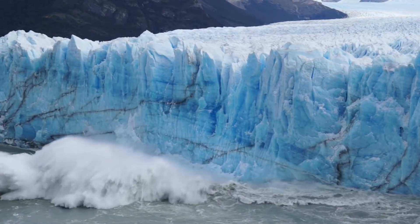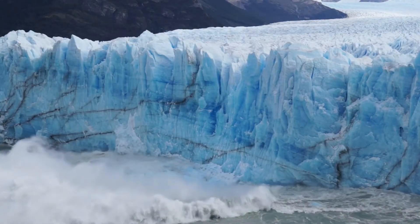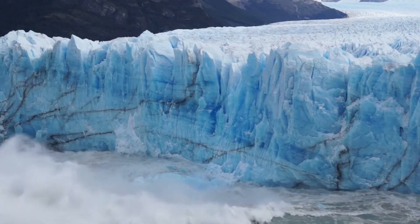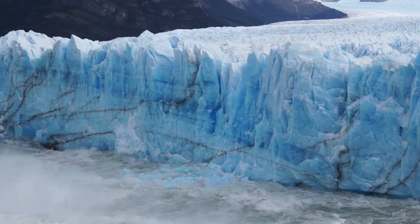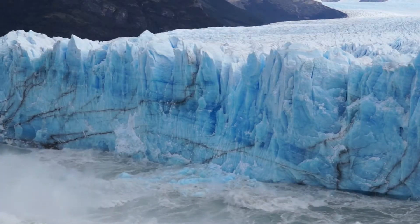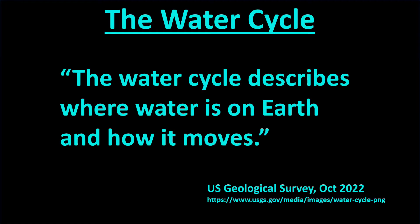The movement of frozen water along the ground in the form of a glacier, then falling into the ocean to become an iceberg, are examples of movements in the water cycle. The U.S. Geological Survey is the federal agency that studies water resources, and they use this definition: the water cycle describes where water is on Earth and how it moves.